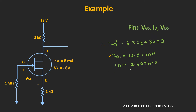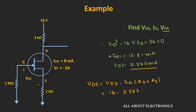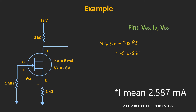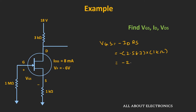Using ID = 2.587 mA, we find VDS = VDD − ID·(RD + RS) = 18 − 2.587·(3k + 1k) = 7.652 V. The voltage VGS equals minus ID times RS = −2.587 mA × 1 kΩ = −2.587 V.